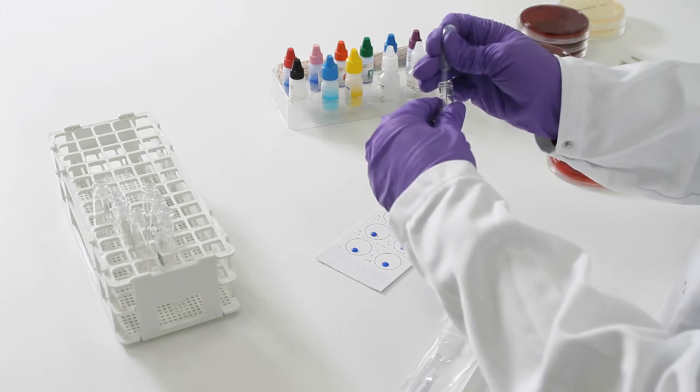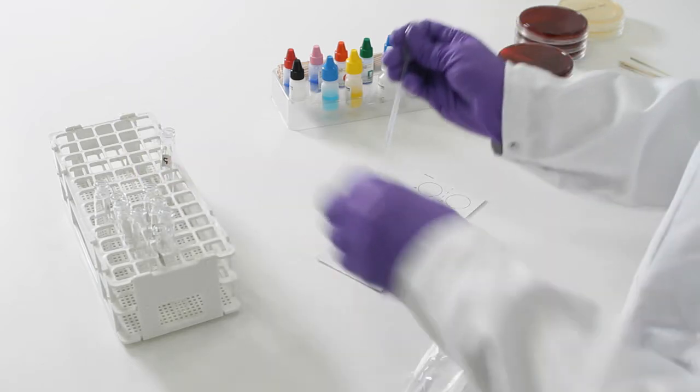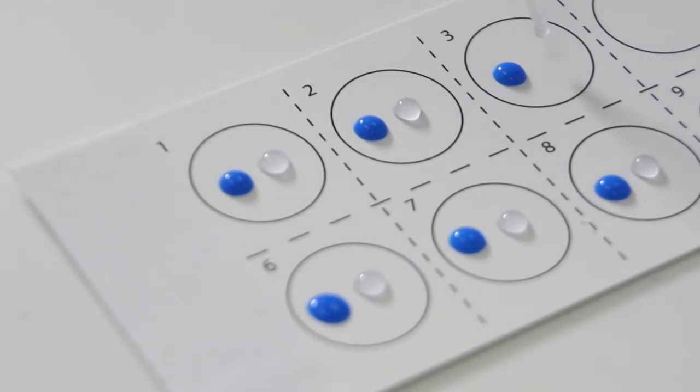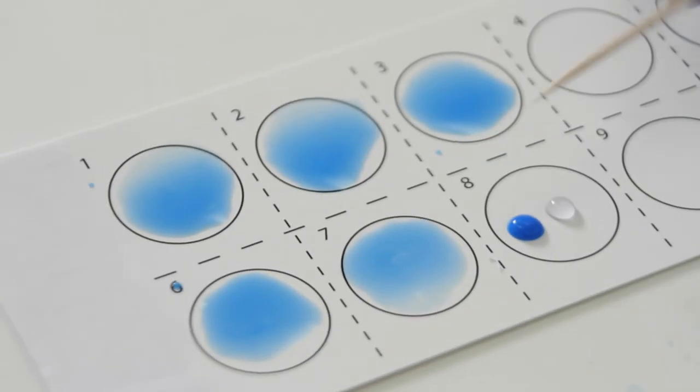Add one drop of each group reagent to separate circles on the reaction card. Then add one drop of extract to each circle. Mix with a stick.